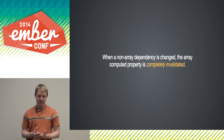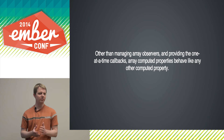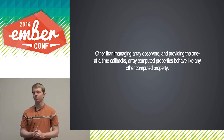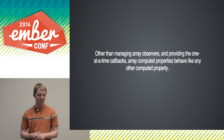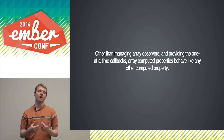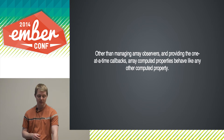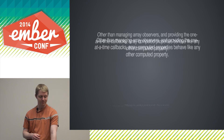This isn't surprising — an array computed property is just a particular kind of computed property, so it still has all the same semantics that regular computed properties have. You can have non-array dependencies, but you won't have array observers initialized or one-at-a-time semantics. You'll just have total invalidation as if it were any other kind of computed property.